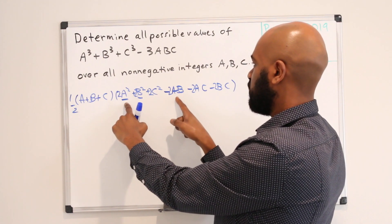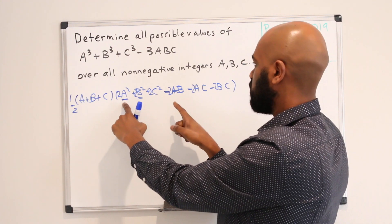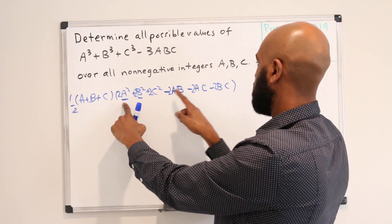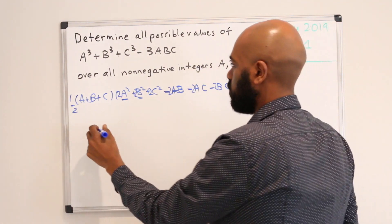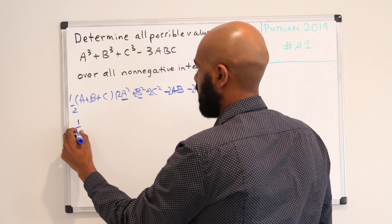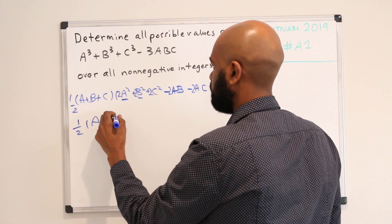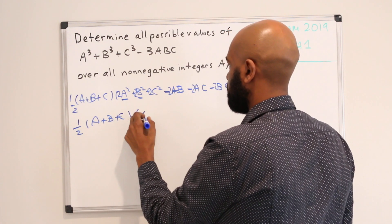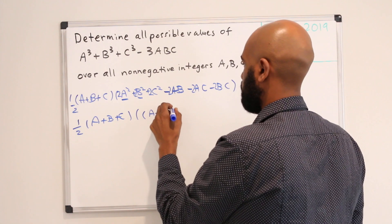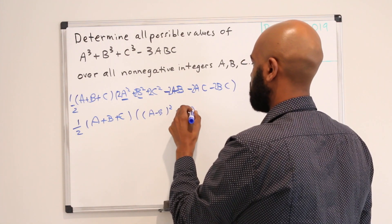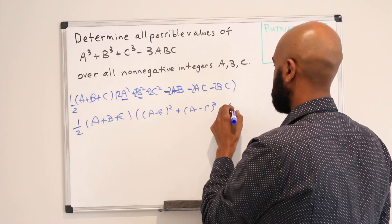So for example, we used A² with this negative 2AB to make one of these perfect squares and then the other A² we can combine with one of the C² and negative 2AC to make (A - C)². So we can rewrite this expression as one half (A + B + C) times [(A - B)² + (A - C)² + (B - C)²].